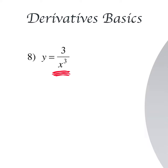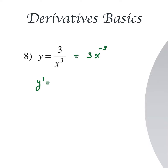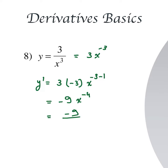Here we have x in the denominator. Instead of using the quotient rule, a simple approach is to bring x^3 up to the numerator and change the sign of the power, making it 3x to the power negative 3. Then we apply the power rule: y prime equals 3 times (negative 3) times x to the power (negative 3 minus 1), which gives minus 9 times x to the power minus 4. Written with positive exponent: y prime = minus 9 over x^4.